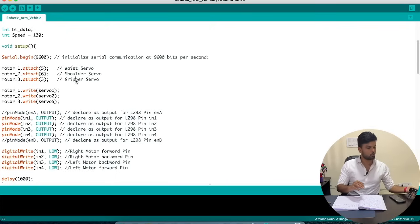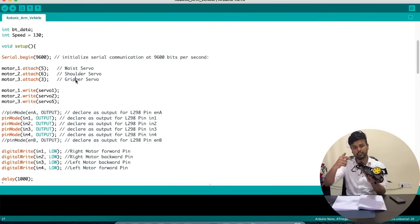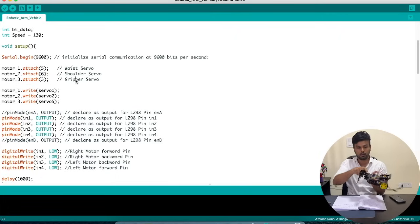Now just to quickly show you a demo, you can see the bottom most one is called the waist, and then this one is the shoulder, and then we have our gripper over here.